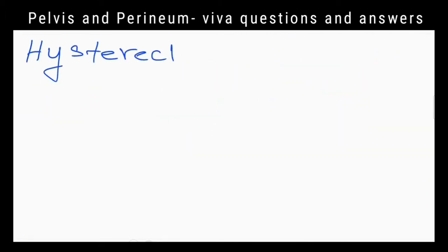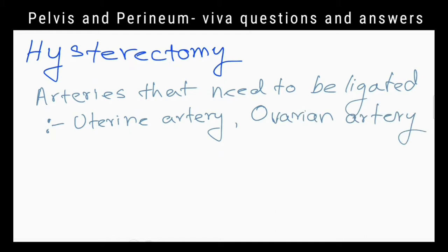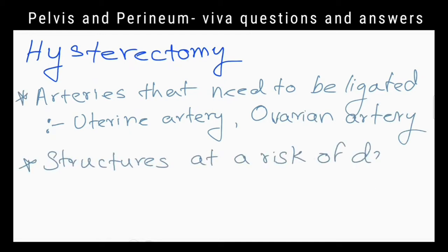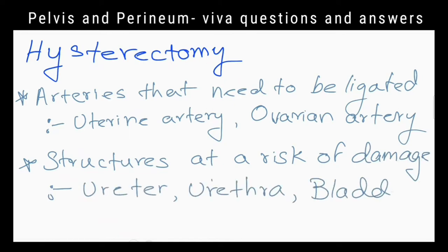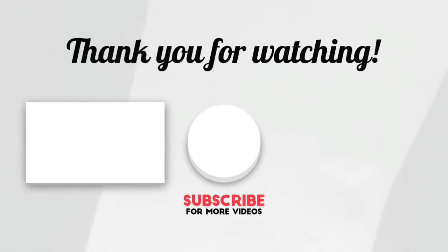What are the arteries that need to be ligated at hysterectomy? The uterine artery and the ovarian artery. What are the structures that can be damaged during that surgery? The ureter and the bladder.